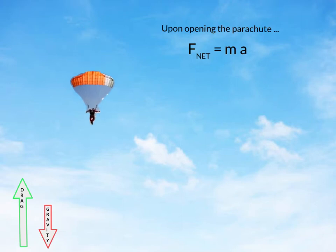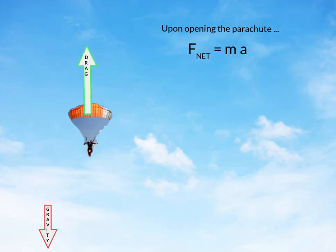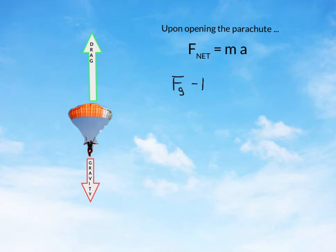But what happens when she pulls the cord for the parachute? Upon opening the parachute, there's going to be a great upward force for just a brief moment. That is, the parachute will create an enormous amount of drag greater than the force of gravity. Writing out the net force then becomes force of gravity minus that force of drag, which is a greater number now, will produce acceleration on this mass. This will result in an upward acceleration on the parachuter when the force of drag is greater than the force of gravity, thus slowing down the parachuter.